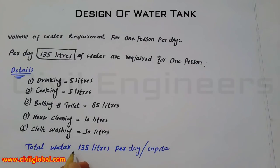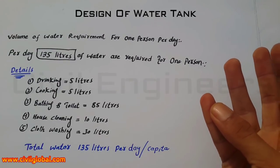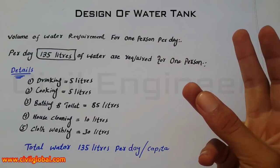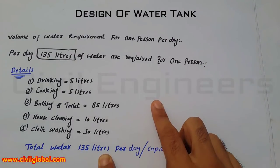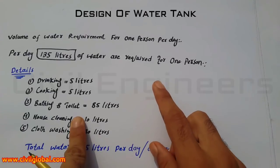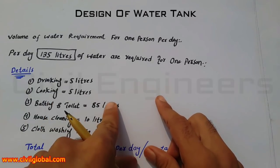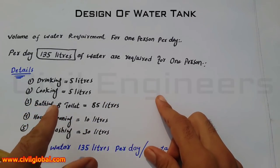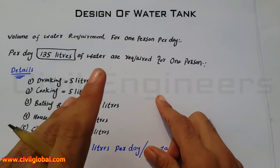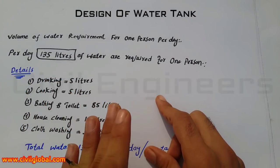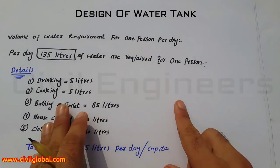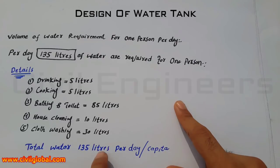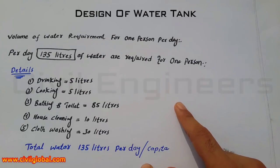So the total water requirement is 135 liters per day per capita for one person. Therefore, when you want to design a water tank for a small family, industry, school, college, house, or anything else, it depends on the volume of water requirement, which is an average of 135 liters per day per capita.